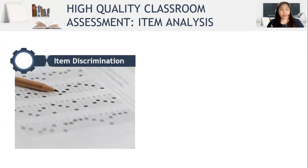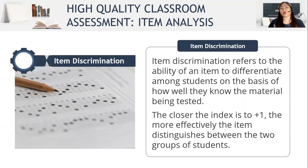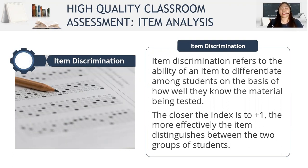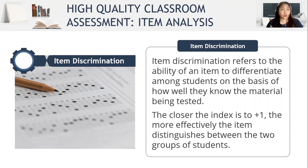What is item discrimination? Item discrimination refers to the ability of an item to differentiate among students on the basis of how well they know the material being tested. The closer the index is to positive 1, the more effectively the item distinguishes between the higher group and the lower group.